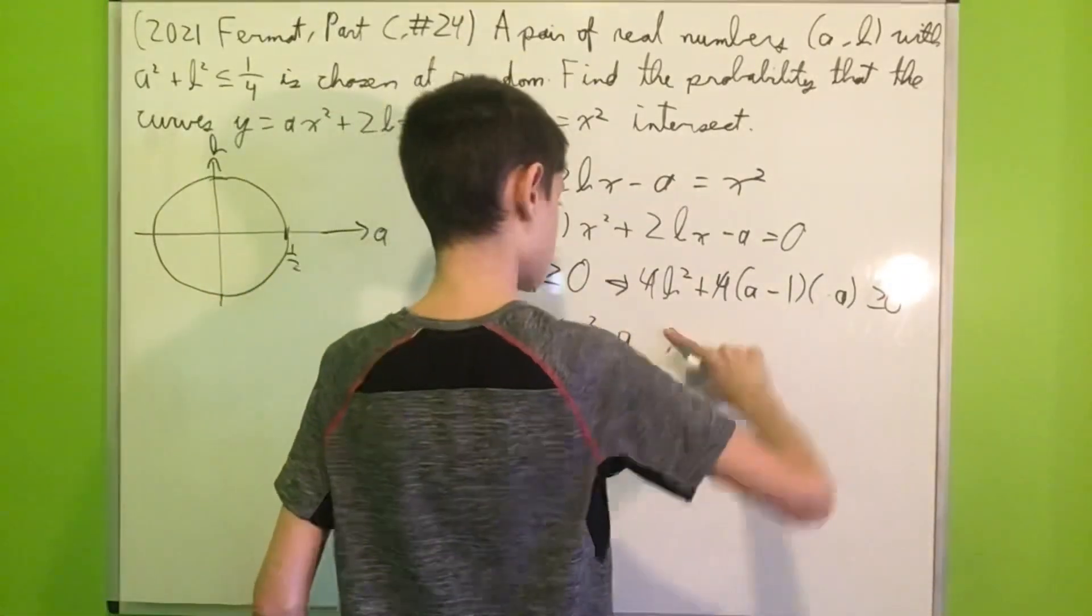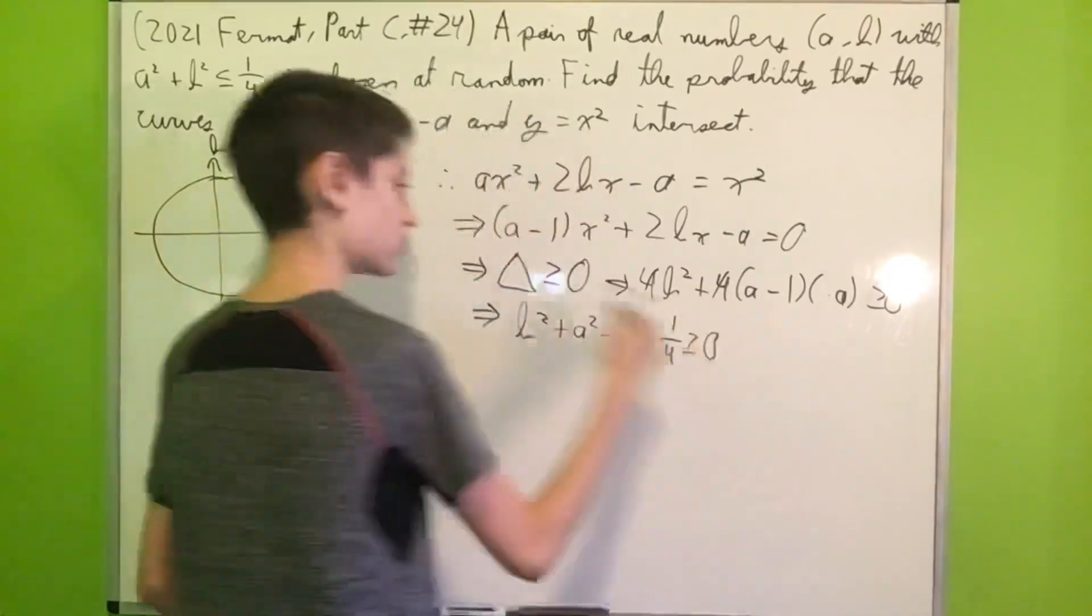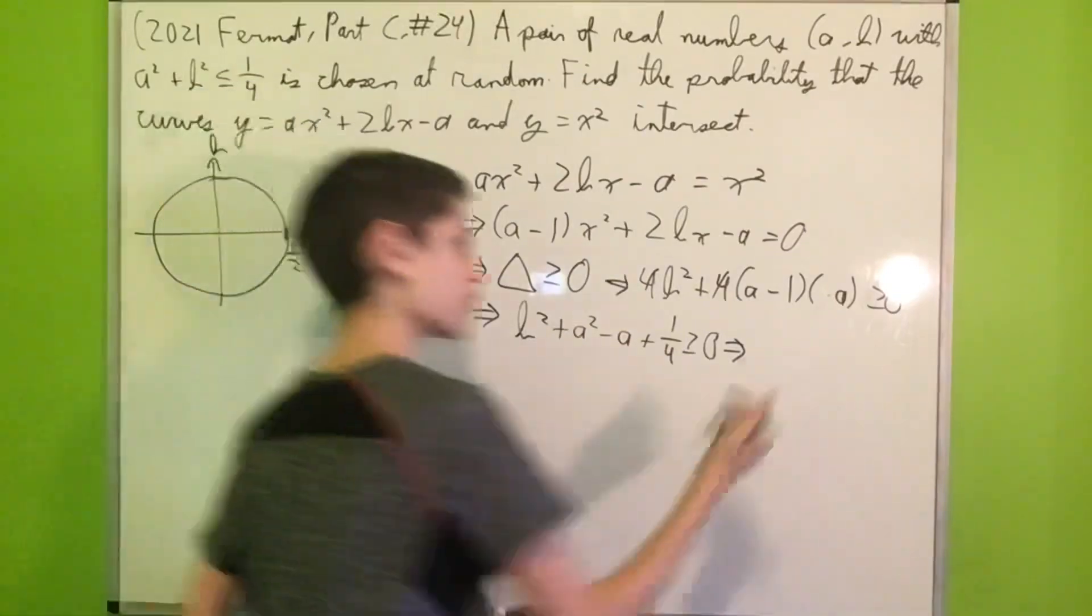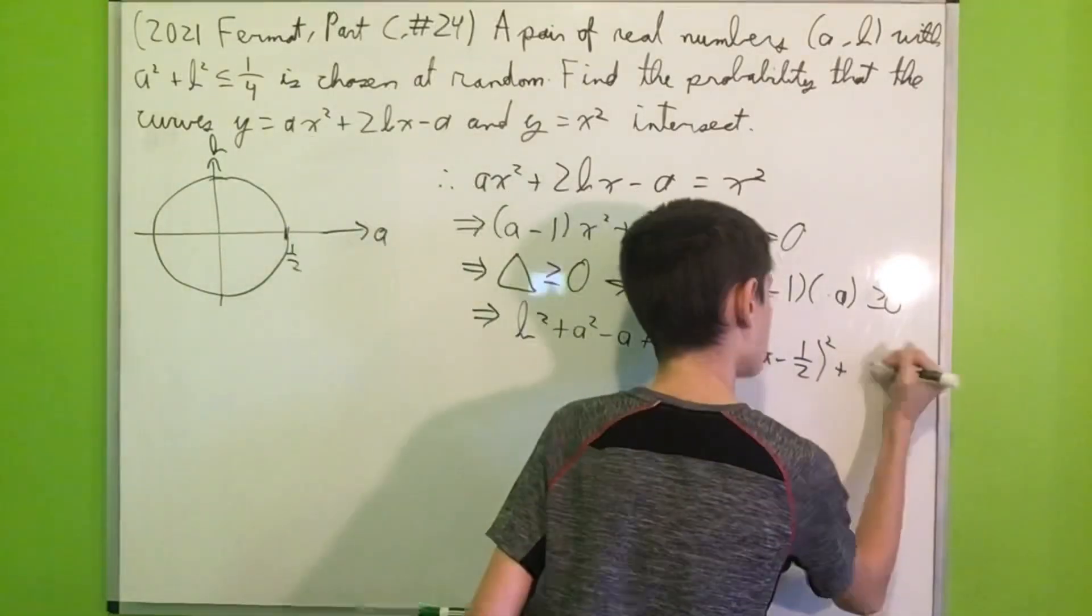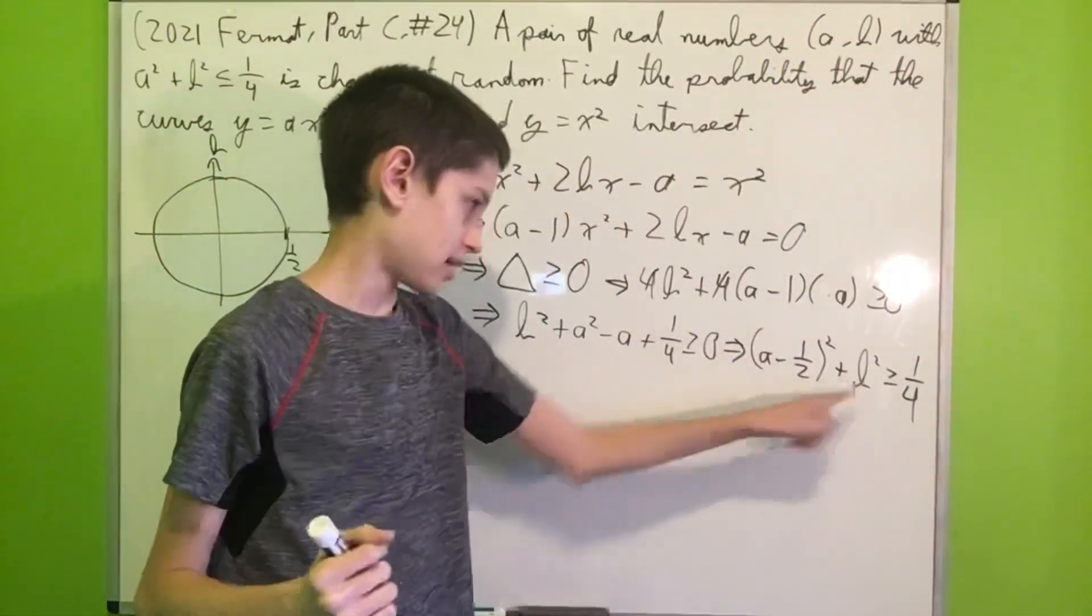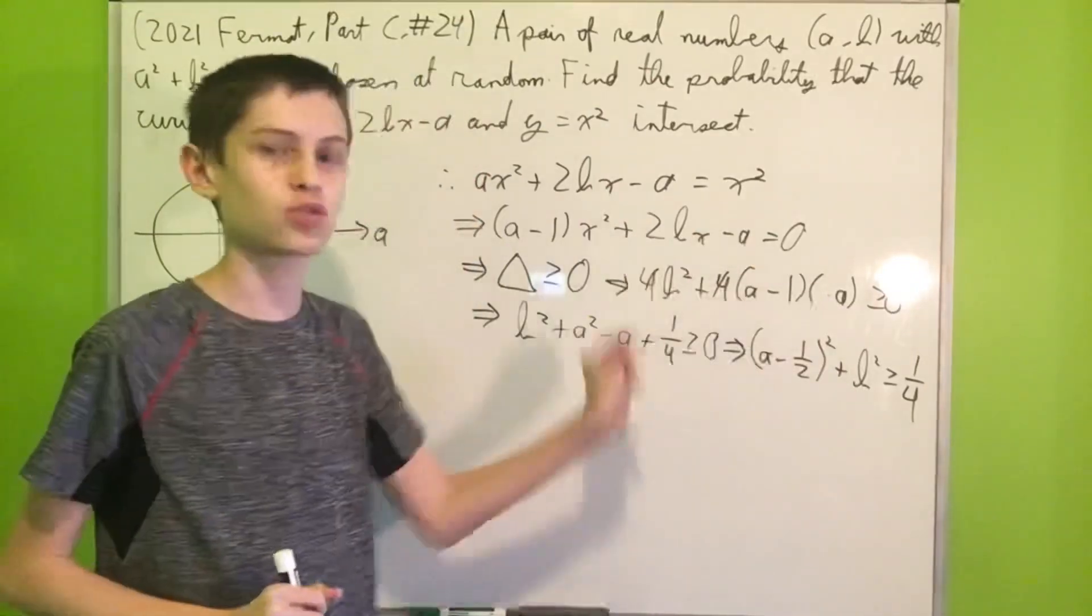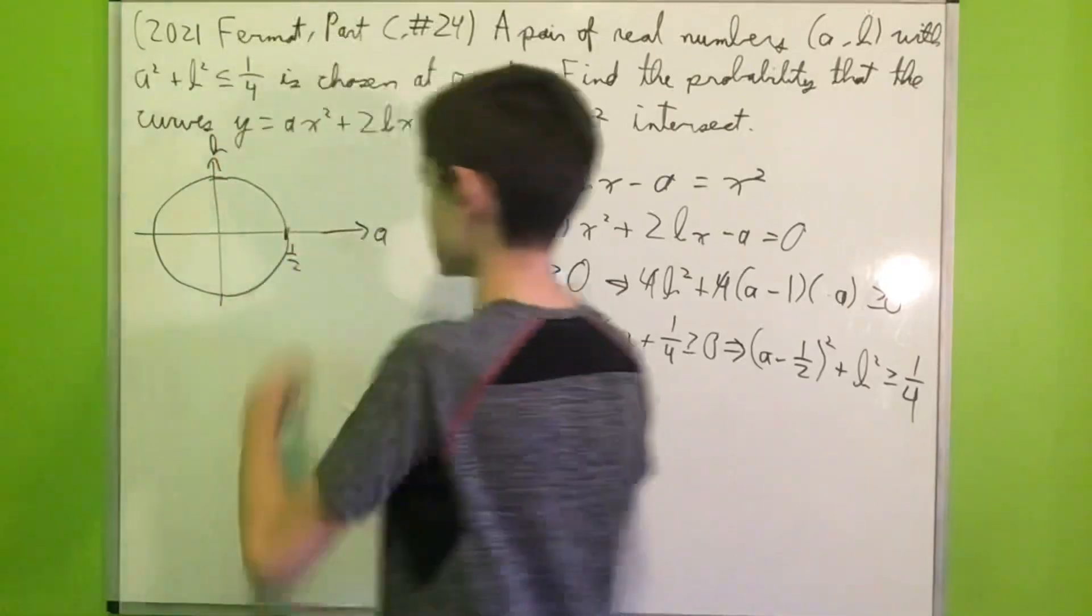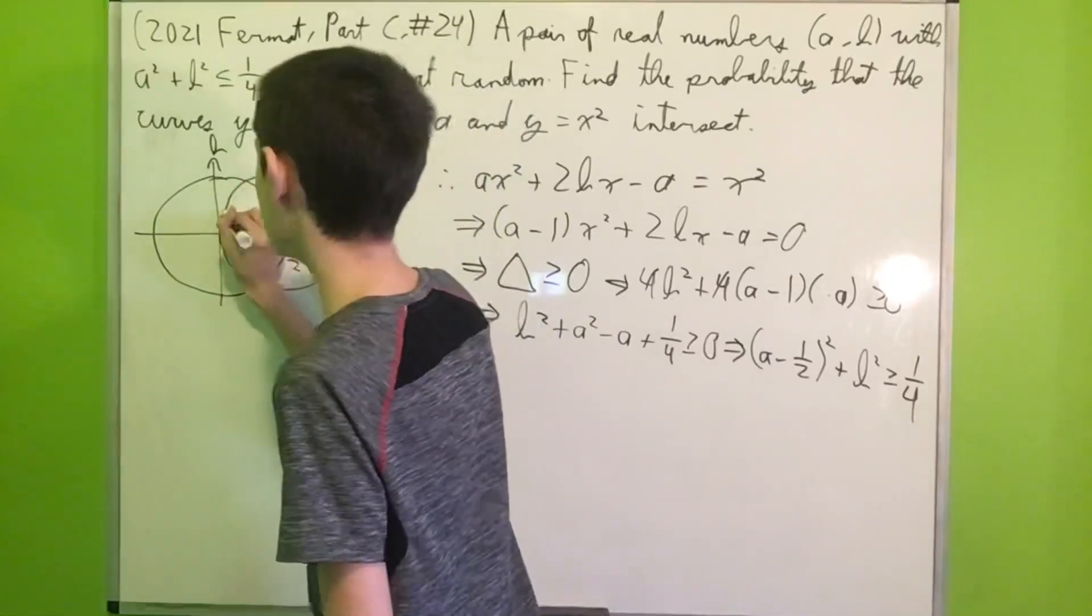And now what we will do is we will add 1/4 to both sides. And why does that help us? Well, this is actually the square of the quantity (a - 1/2)² and then we add b², and this is ≥ 1/4. In the case where we have an inequality, this is just the circle centered at (1/2, 0) with radius √(1/4) which is 1/2. So that means in our phase space, it'll look a bit like this.